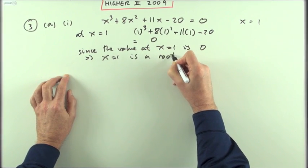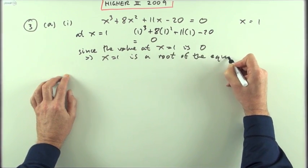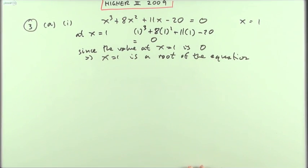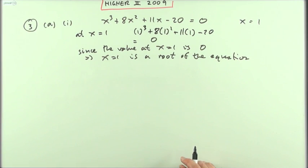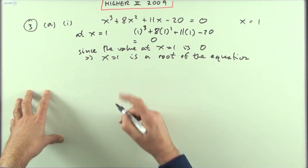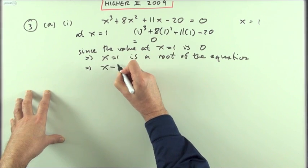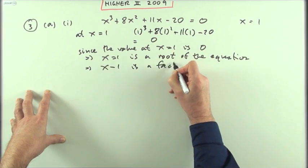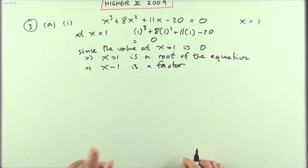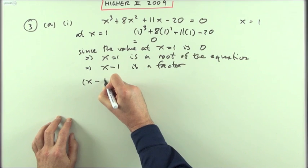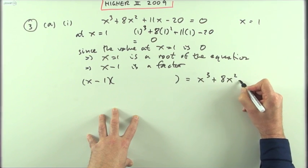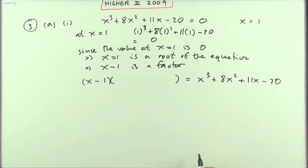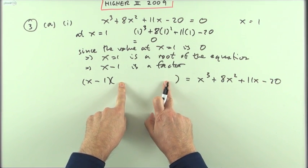Since the value at x equals 1 is 0, that means x equals 1 is a root of the equation. The second part said hence factorize just the expression part - notice not the equation, just the expression part. Well, if x equals 1 is a root, that means x minus 1 is a factor. Then you would see (x - 1) times something would have to produce x³ + 8x² + 11x - 20.